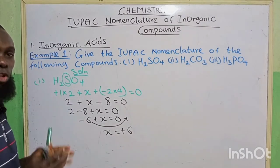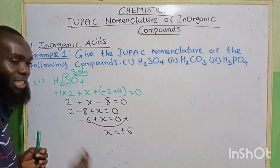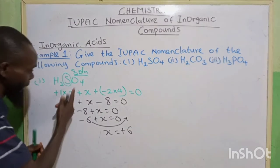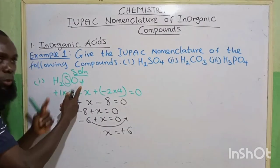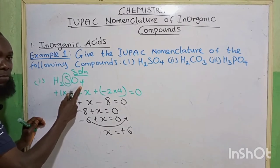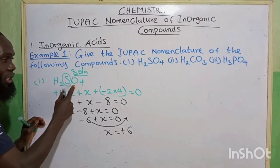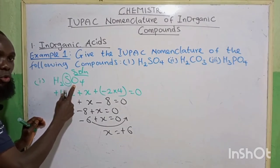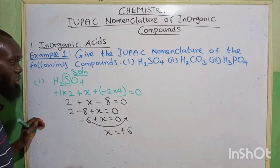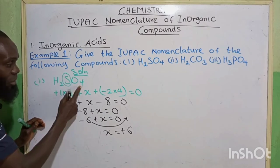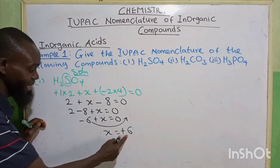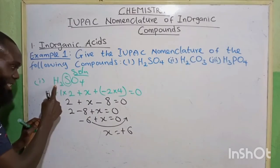To name an acid, you start from the back. The 4 means tetra, oxygen changes to oxo, and sulfur changes to sulfate. So we have tetraoxosulfate(VI) acid.